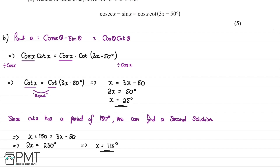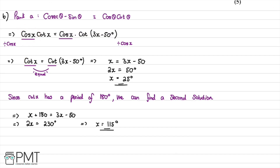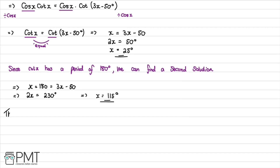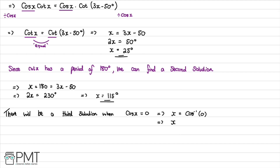We must also account for the solution when cos x equals zero, because in the original expression we divided by cos x. There will therefore be a third solution when cos x equals zero. Taking the inverse cosine of zero gives x equals 90 degrees, so our three solutions are x equals 25 degrees, x equals 90 degrees, and x equals 115 degrees.